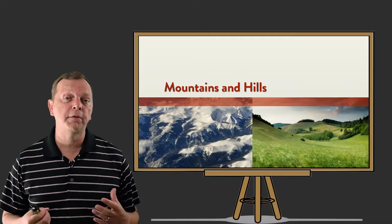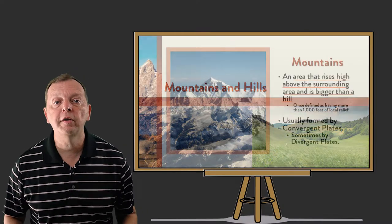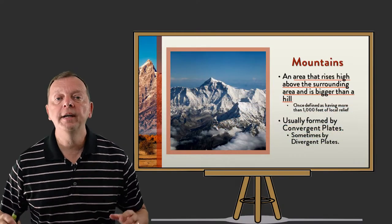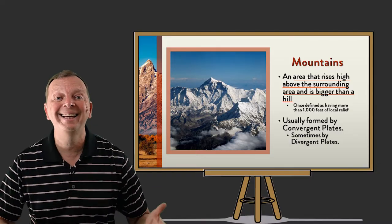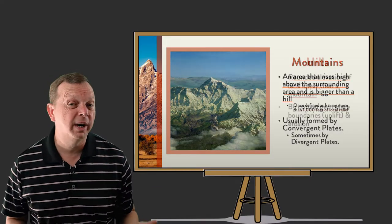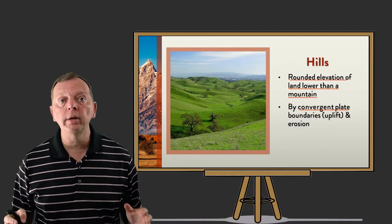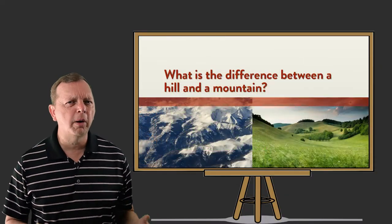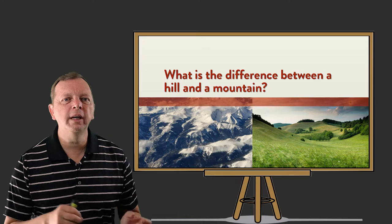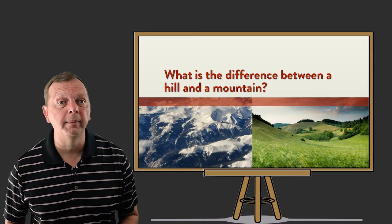Now we'll start putting bumps on the ground. I want to warn you that many geography terms do not have hard and fast definitions. This includes the definition for hills and mountains. The definition of a mountain is that it's an area that rises very high above the land around it and that it is bigger than a hill. A hill is usually a natural elevation of land lower than a mountain — so a hill is smaller than a mountain, but how small does a hill or how big does a mountain have to be?